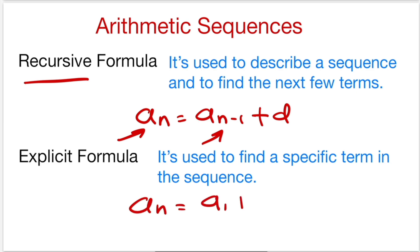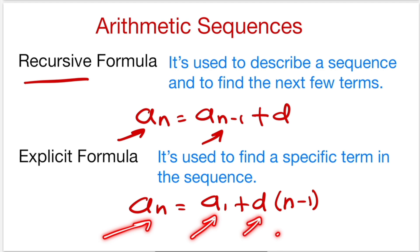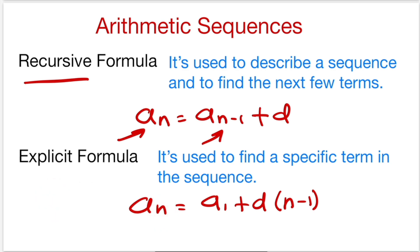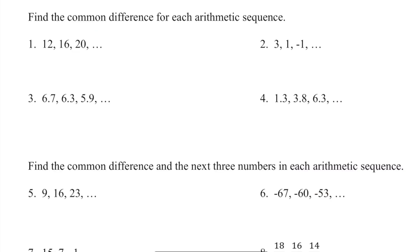The explicit formula is: a sub n equals a sub 1 plus d times (n minus 1), where a sub n is my nth term, a sub 1 is my first term, d is the common difference, and n is the term number. For example, a of 54 means n would be 54.